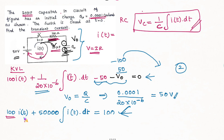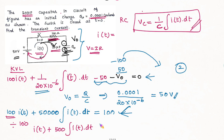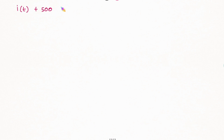If we divide throughout by R equal to 100, we can simplify the equation. So 100 divided by 100 gives I of T, and 50,000 divided by 100 gives 500. We have I of T plus 500 multiplied by the integral of I of T dt equal to 1.